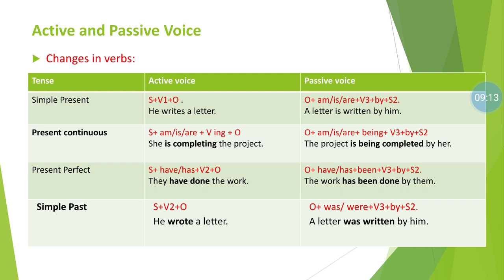Number two: present continuous tense. Active structure is subject + am/is/are + verb+ing + object. For example, 'She is completing the project' — 'is' is a helping verb and 'completing' is the main verb in continuous form. To transfer to passive: object + am/is/are + being + V3 + by + subject (second form). We use the additional helping verb 'being' to keep the continuous flow. So the passive form is: 'The project is being completed by her.'